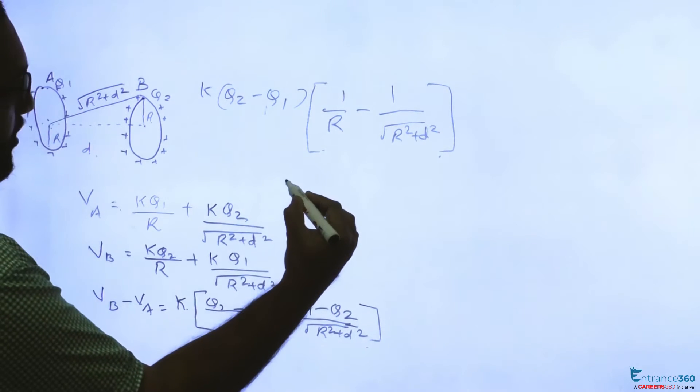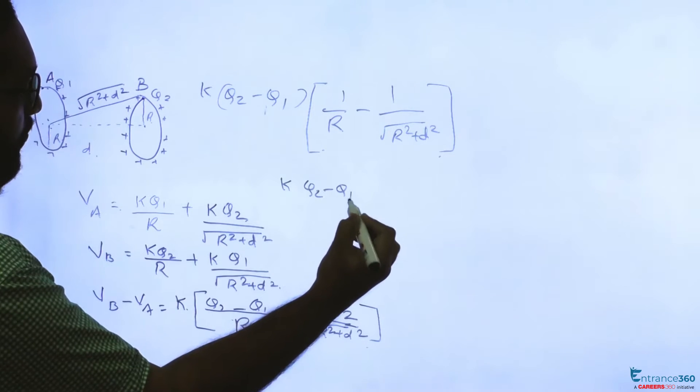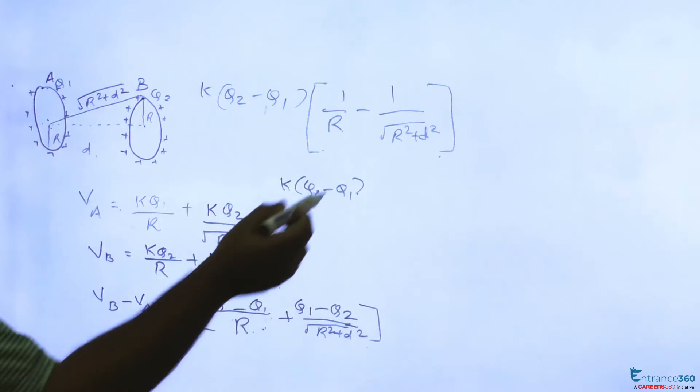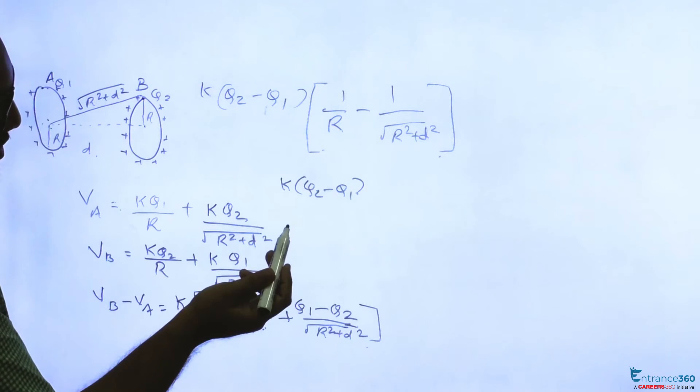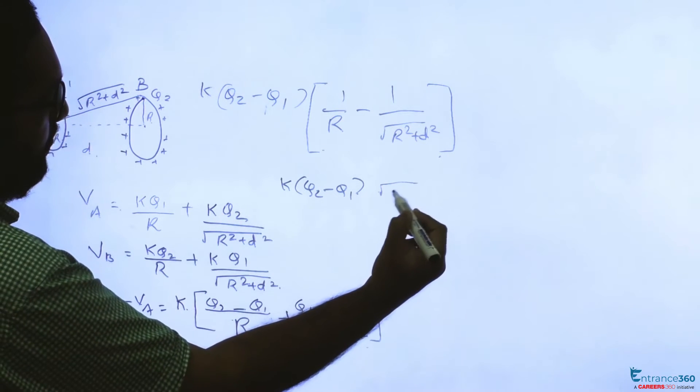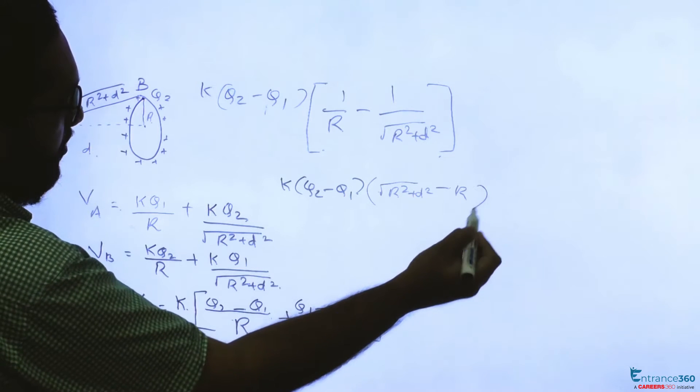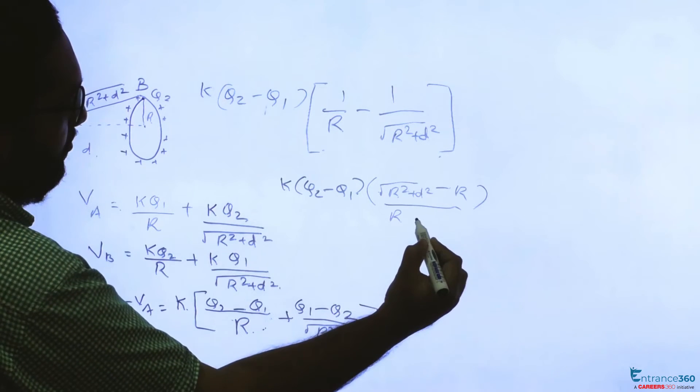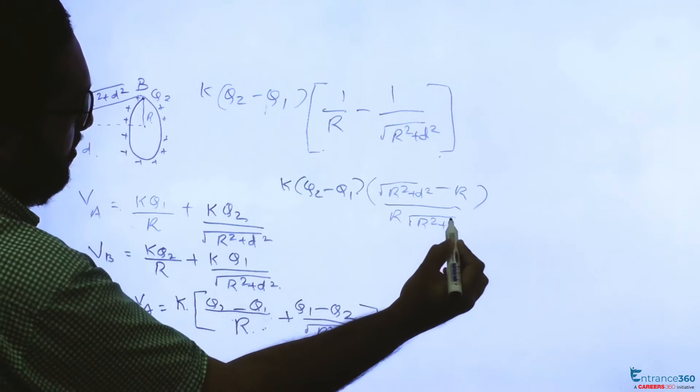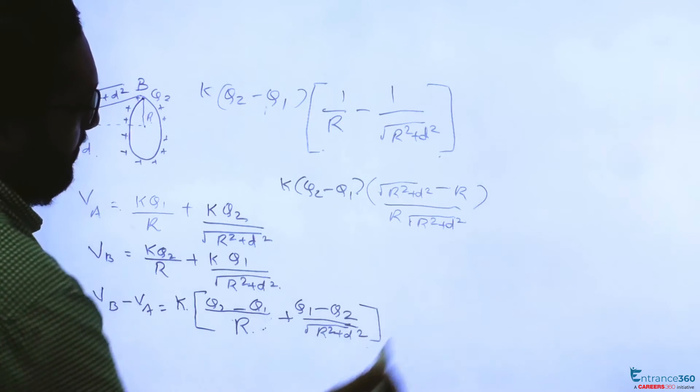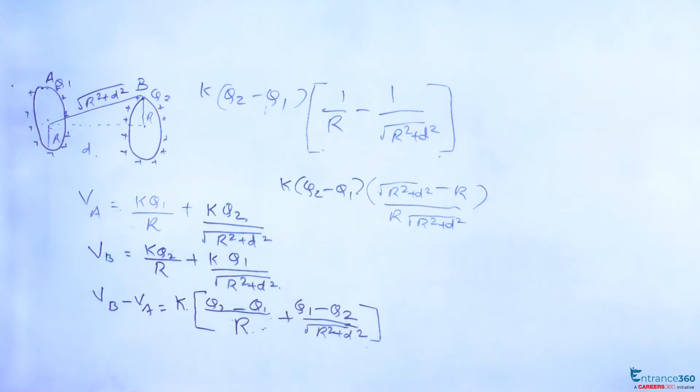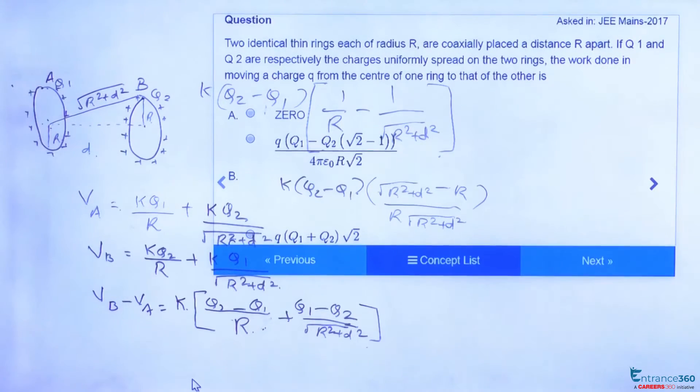So it is K Q2 minus Q1 into root of R square plus D square minus R divided by R into root of R square plus D square. Let's see what our options are. This will be potential, we have to multiply this with charge Q then you will get the work done.